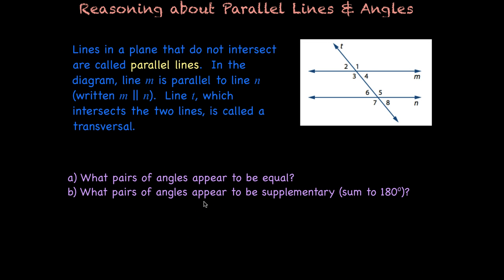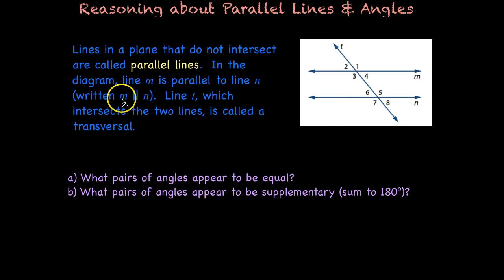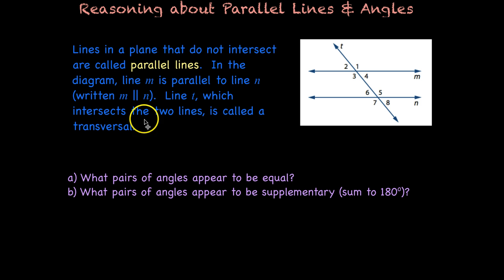Lines in a plane that do not intersect are called parallel lines. In this diagram here, you can see that line M is parallel to line N. The way we write it in short notation is M with two straight lines and an N, and that just means parallel.